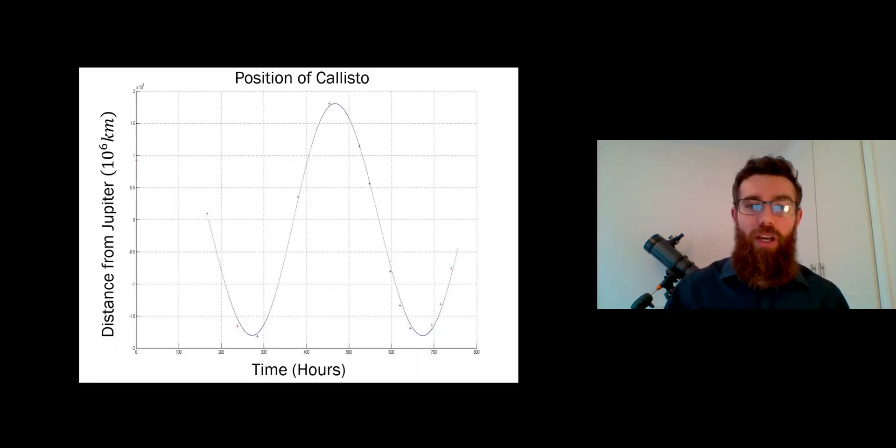When you do that and you've took enough measurements over a period of time—you're going to want to do a few weeks really, and it all depends on your weather—so I did it here for Callisto and the data points I made were the red crosses. I've made a couple of red crosses on here. You can see where there's some gaps due to the bad weather, but you can see it fits fairly well to the blue line.